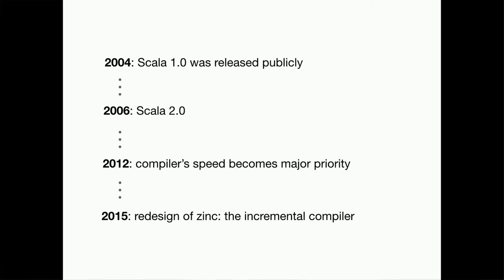Scala has been released in 2004, but its real popularity rise started in 2006 with Scala 2.0 release. By 2012, as people were building larger projects and adopting Scala companies, the compiler speed became the top concern. And in 2018, a lot of people in the Scala community list compiler performance still as a top priority.